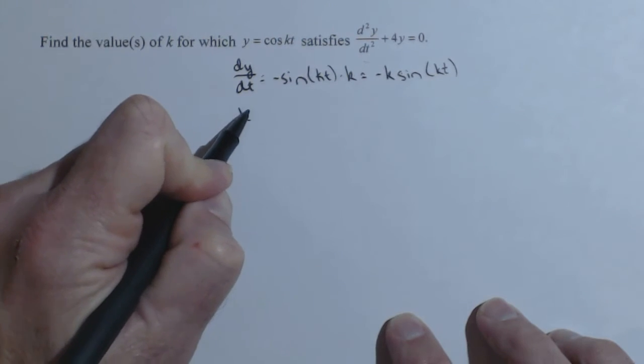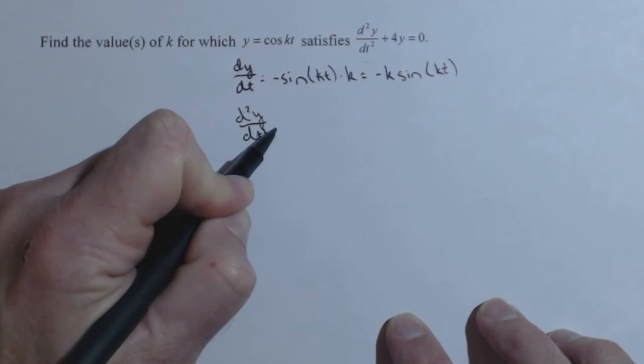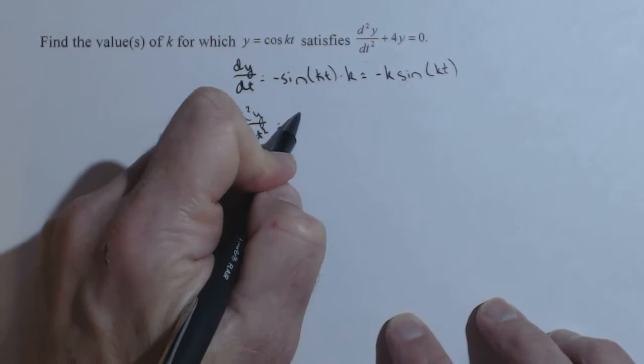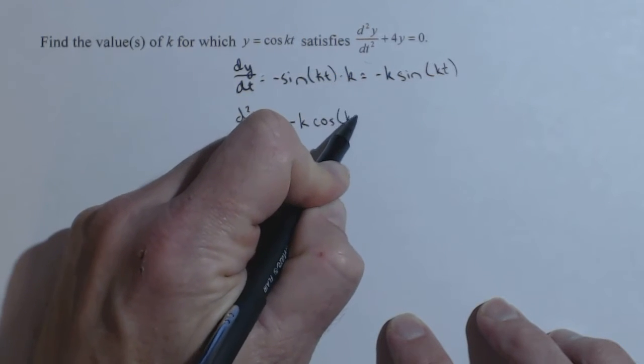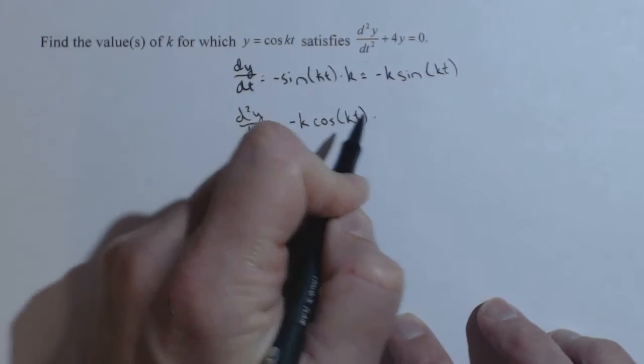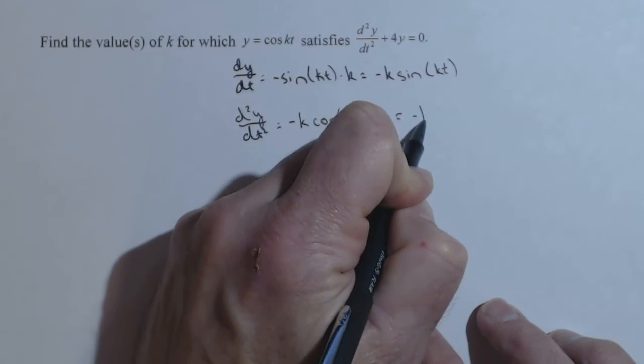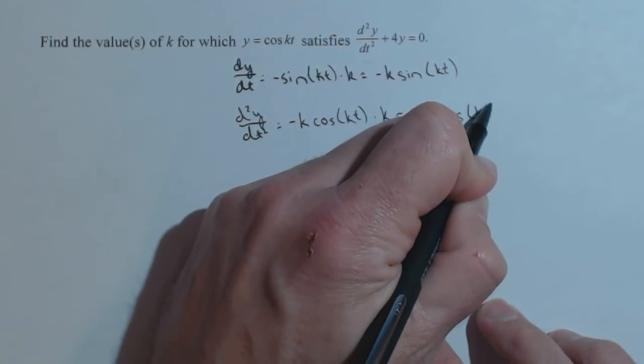Next thing we do is find the derivative of that derivative, so our second derivative. Now this doesn't need a product rule because k is just a constant. So I have negative k, derivative of sine is cosine of kt, times once again the derivative of the inside. So we get negative k squared cosine of kt.